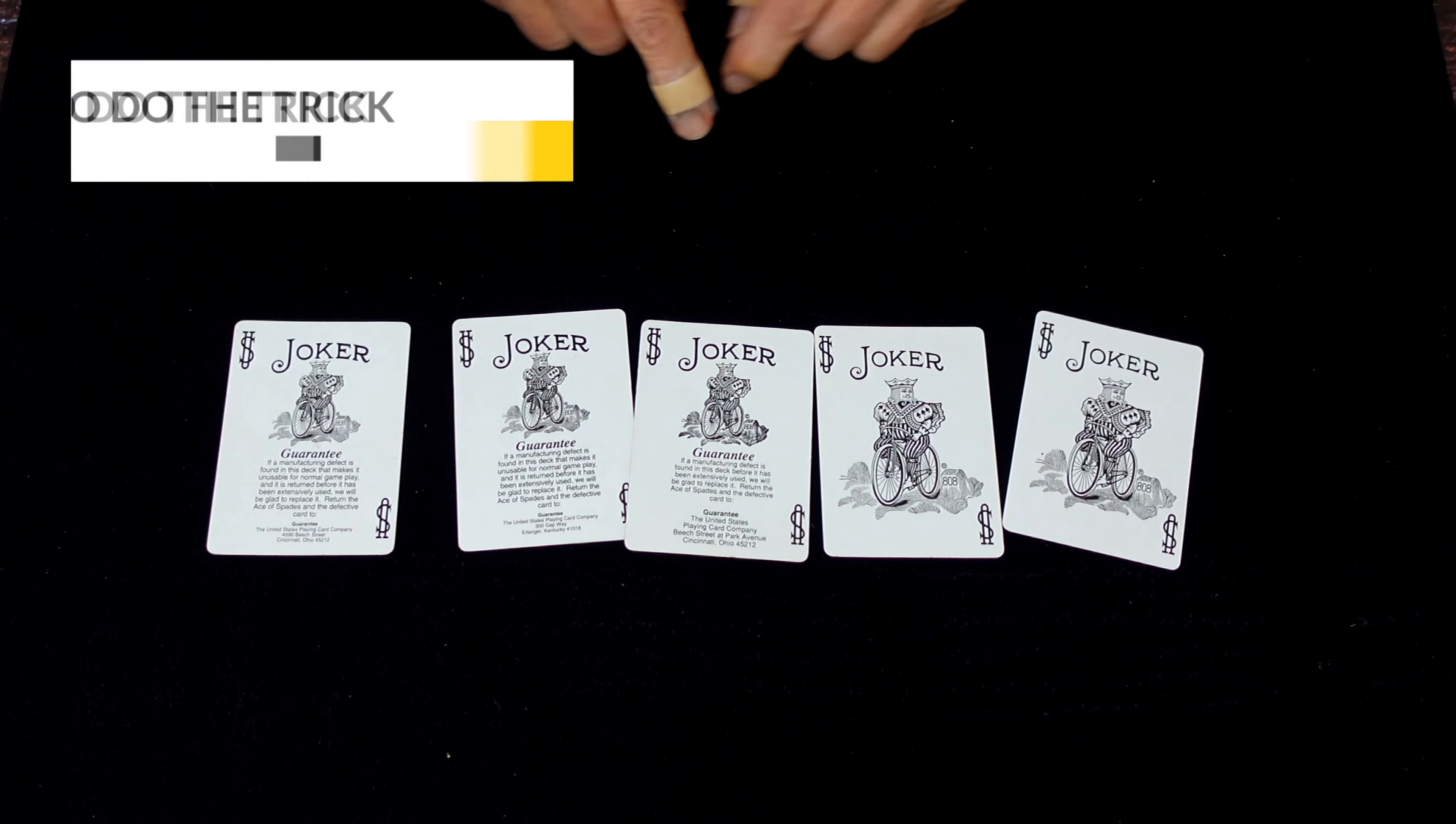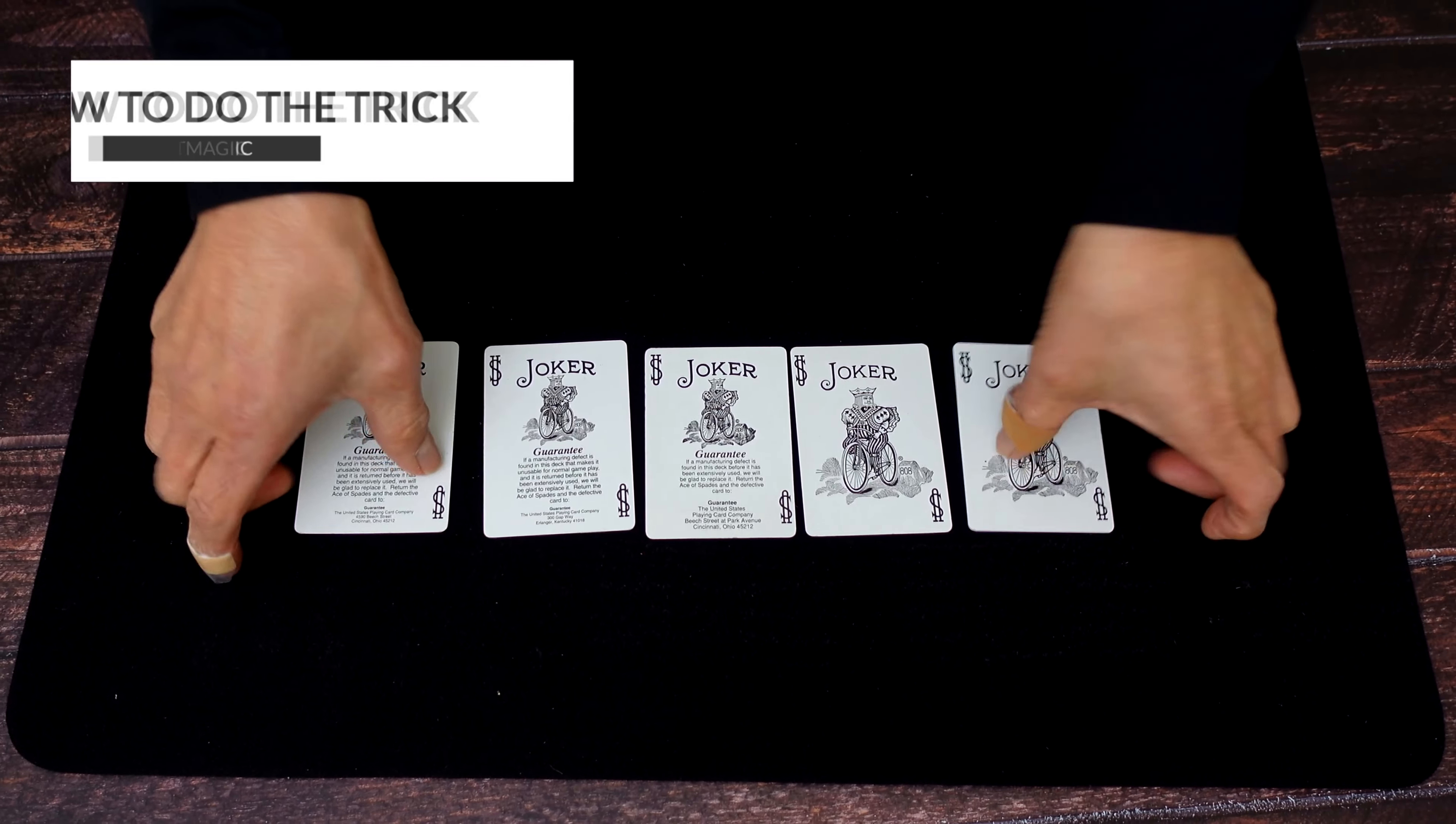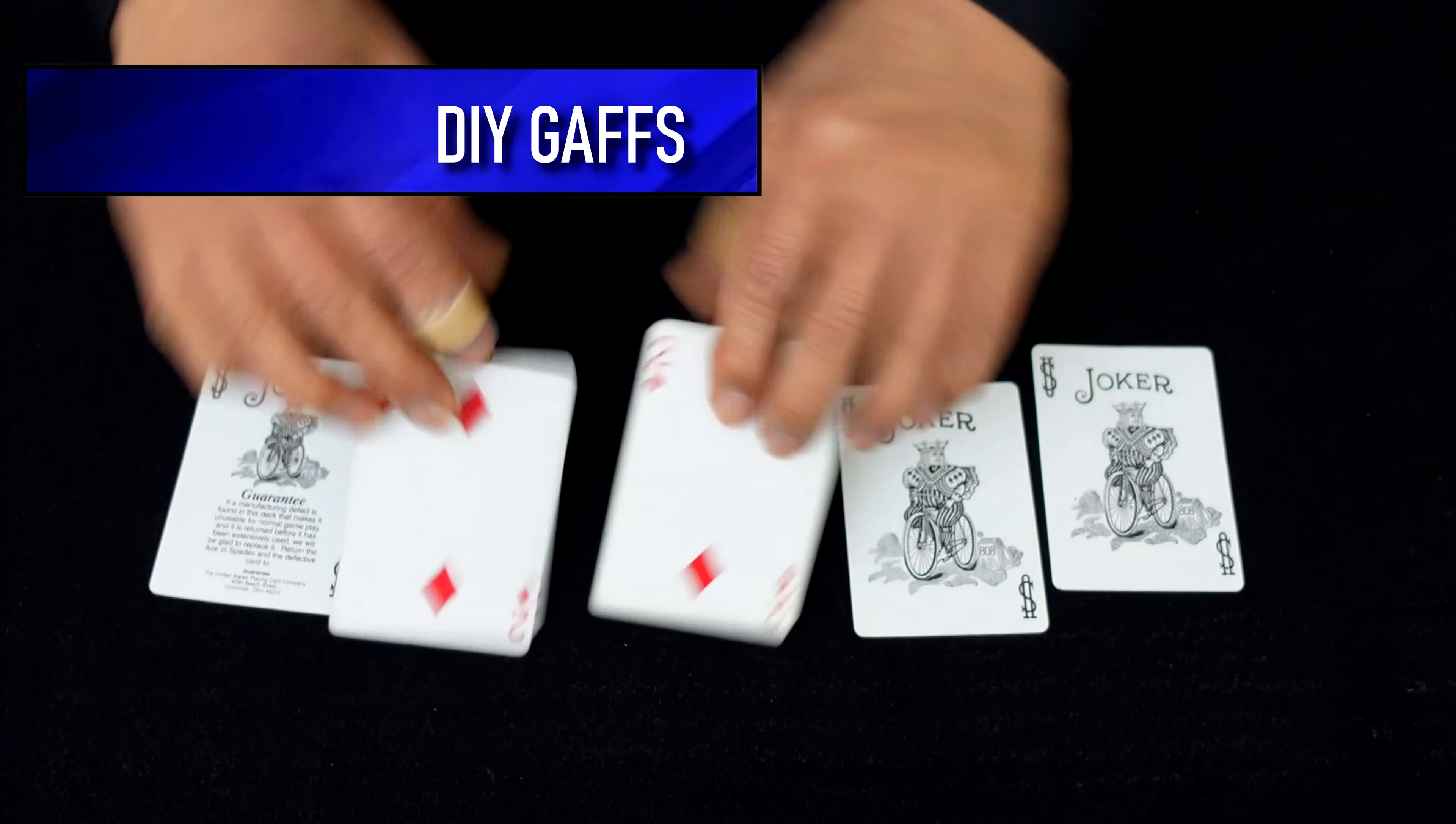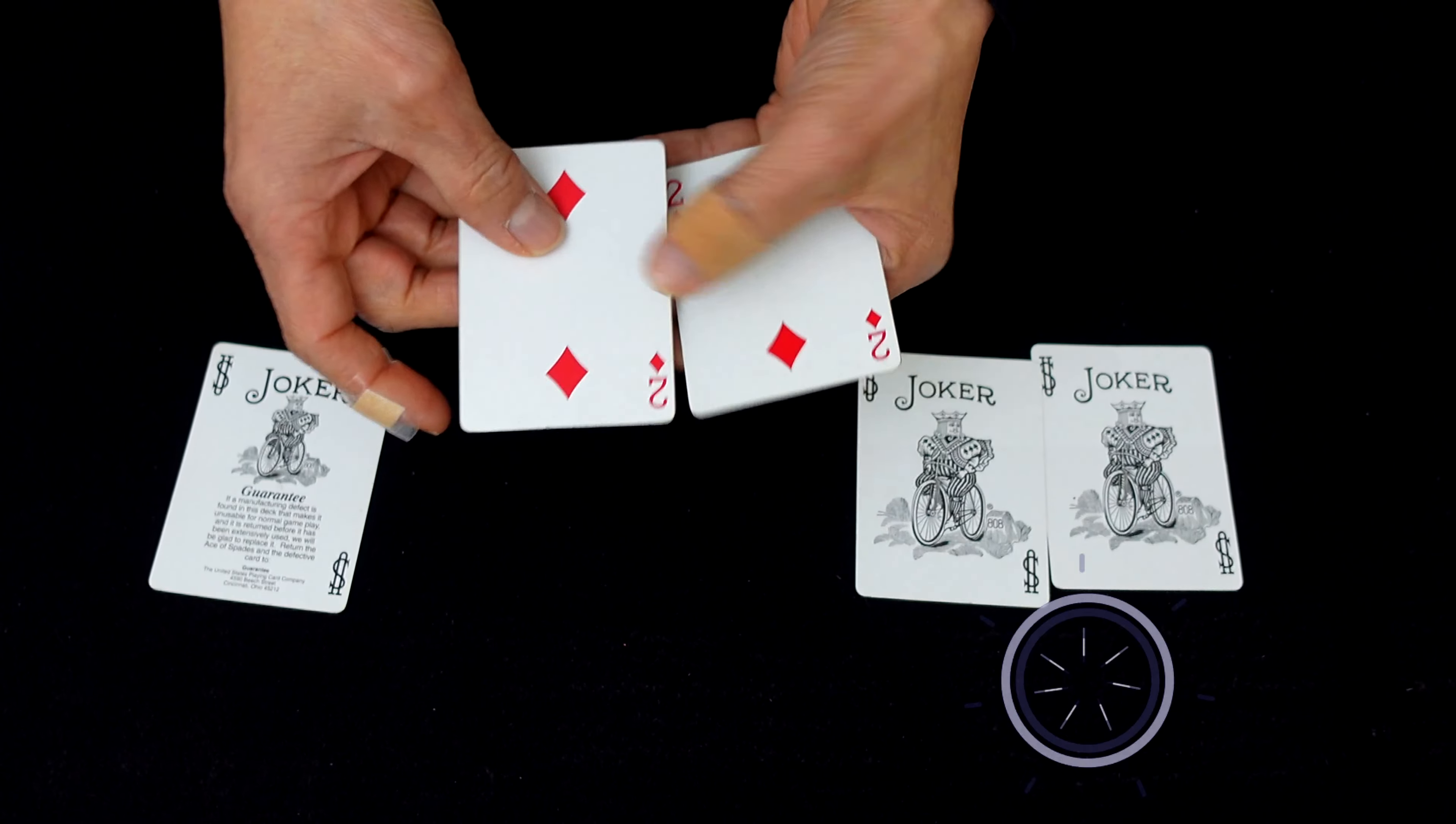For this trick you're going to need five Jokers or any five of a kind if they actually exist. Jokers make it easy because you can have more than four Jokers. The other thing you're going to need are a couple of other cards matching, and all you do is glue.